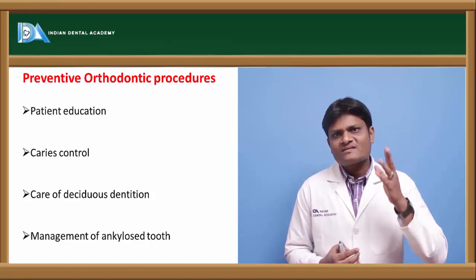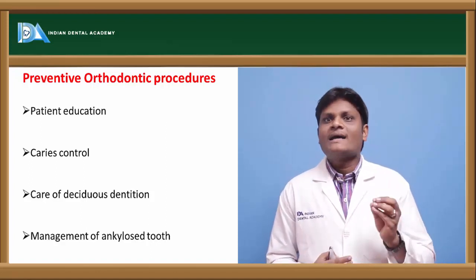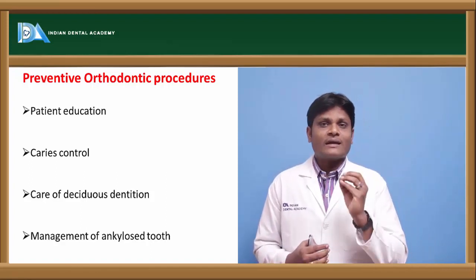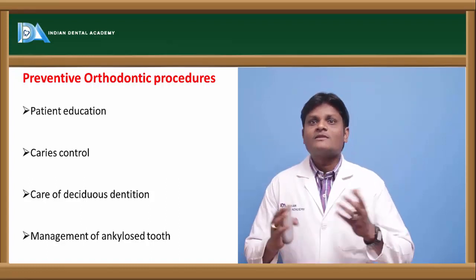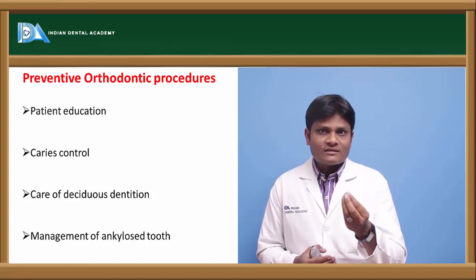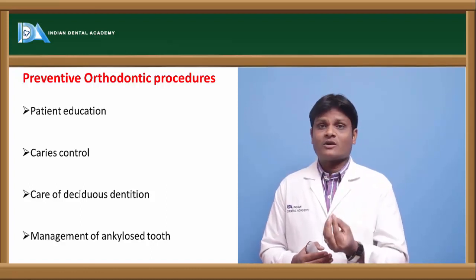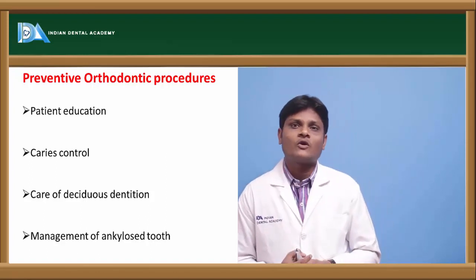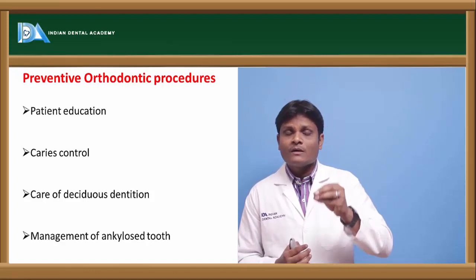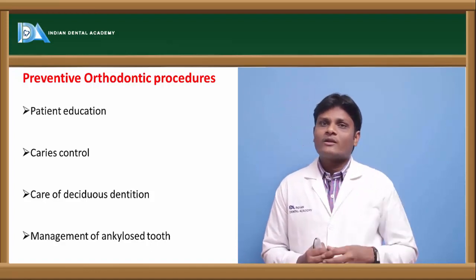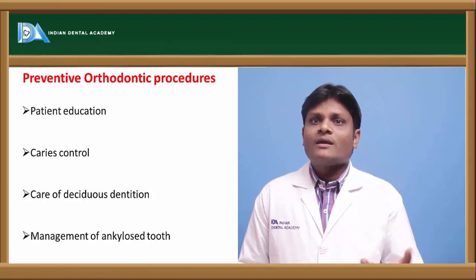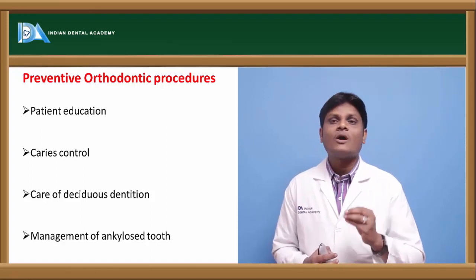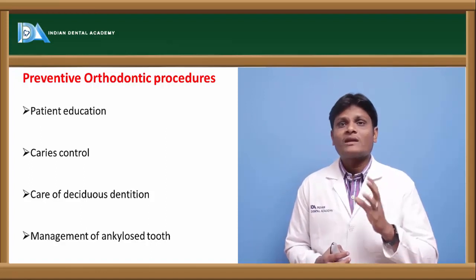It is said that the best space maintainer is the natural tooth. As long as the natural tooth is preserved in its normal anatomical form, there is no chance of arch length loss. If the structure of the natural tooth is changed by caries lesions, there is more chance of arch length loss and malocclusion. We need to prevent this by using topical fluoride applications or pit and fissure sealants wherever indicated.